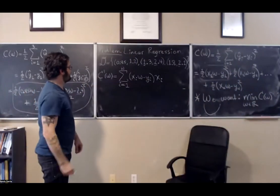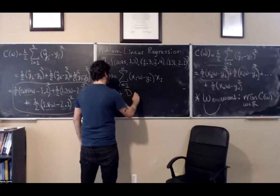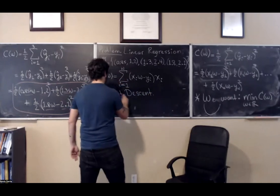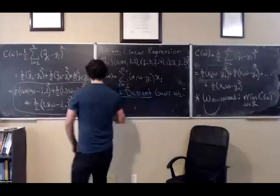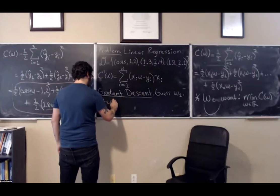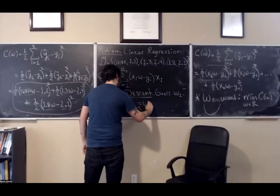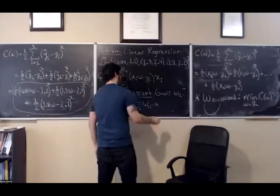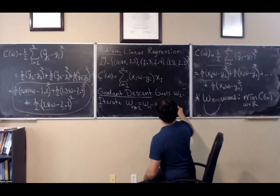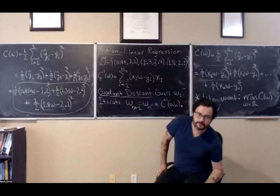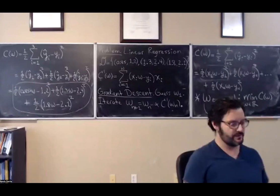Now we can do gradient descent: guess an initial w_1, then iterate the update rule w_{n+1} = w_n - alpha * C'(w_n), where alpha is the learning rate, a number between 0 and 1. We just have to carefully set up our cost function and its derivative. Let's go ahead and pull this up in a Jupyter notebook.